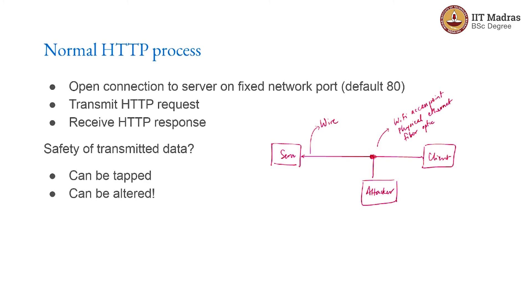All these things are possible, and I want to make sure that the information I send to the server cannot be read and understood by the attacker. I cannot prevent them from seeing the ones and zeros on the line, but as long as those ones and zeros do not make any sense to them, I am probably safe. In other words, I need to encrypt the wire — I need to use some kind of mathematical function to convert the data into a different set of bits which I and the server understand but nobody else can make sense of.